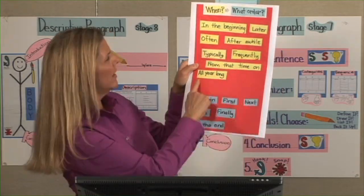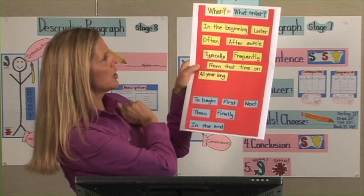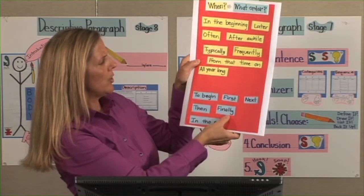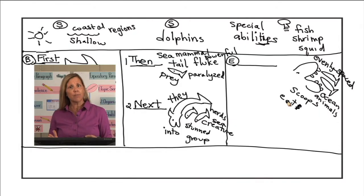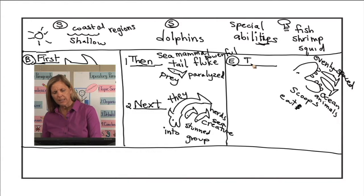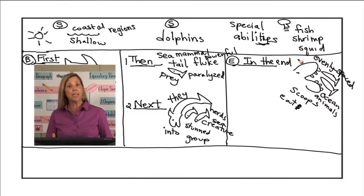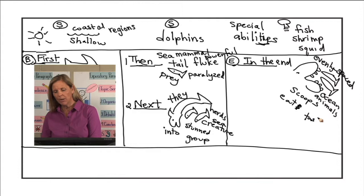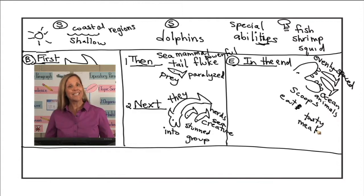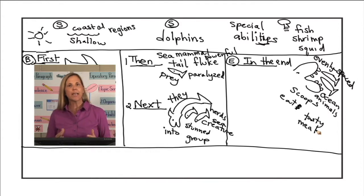If the counts don't match, students can go back and read each part of their organizer to see where they left out those mechanics. This is Stage 7 Informative Explanatory Writing using the sequence organizer. The next video is going to be Stage 7 Informative Explanatory Writing but using the categories organizer. What we were adding at Stage 7 was the hook, the snappy ending, and expanding sentences so they become even more sophisticated.